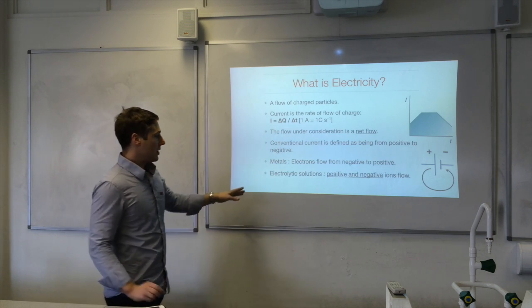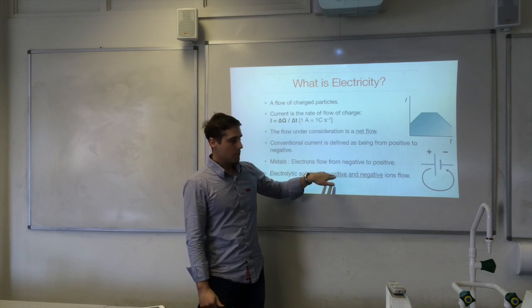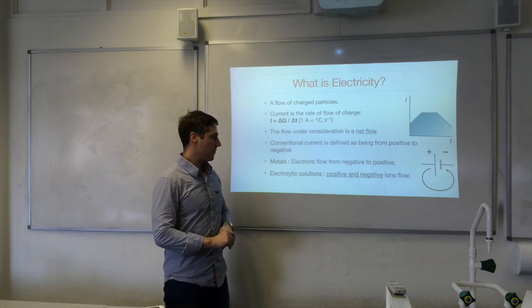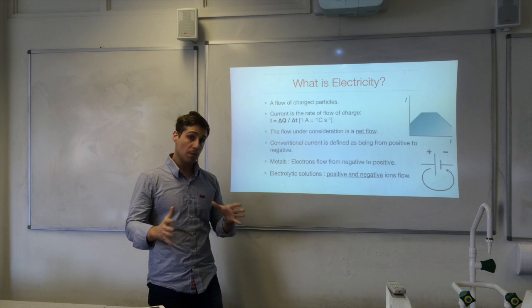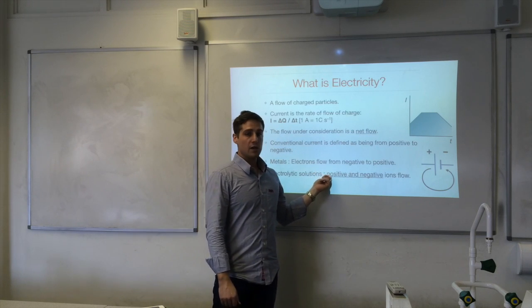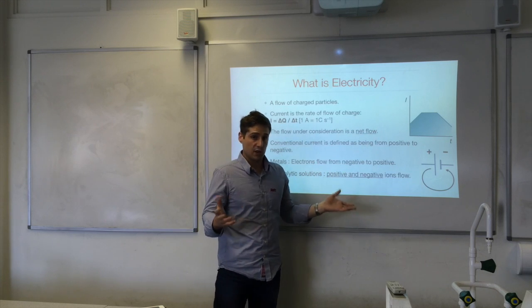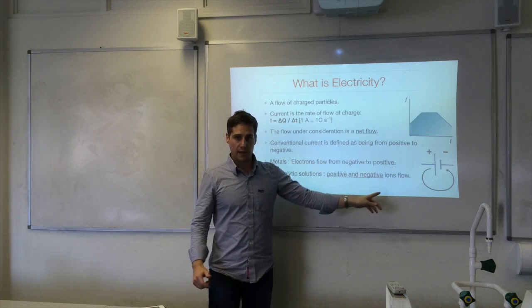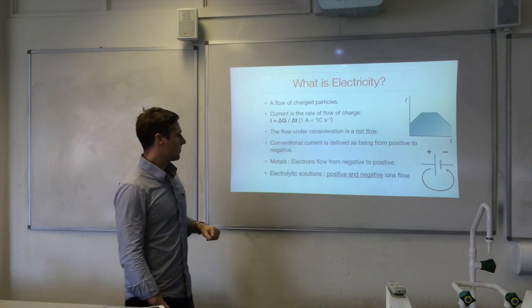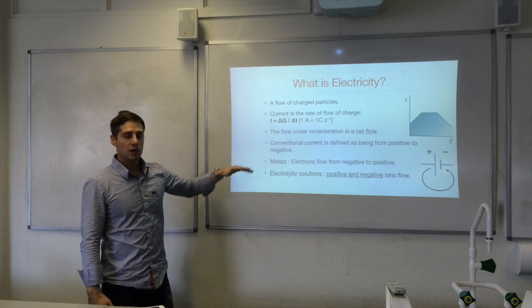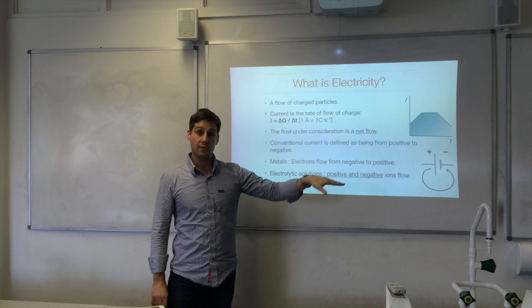If you have an electrolytic solution, you have not just positive or negative ions, but both positive and negative ions flowing. A common mistake is to describe the movement of charge as just ions in general, but actually you have both positive and negative ions moving at the same time. So in metals, charge carriers are electrons; in electrolytic solutions, you have positive and negative ions.